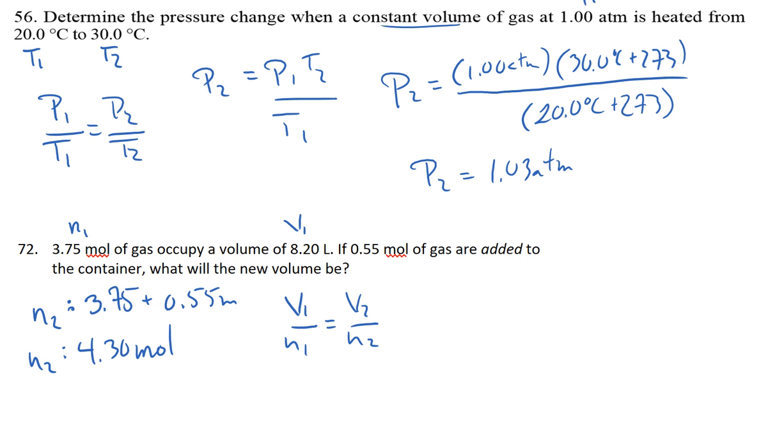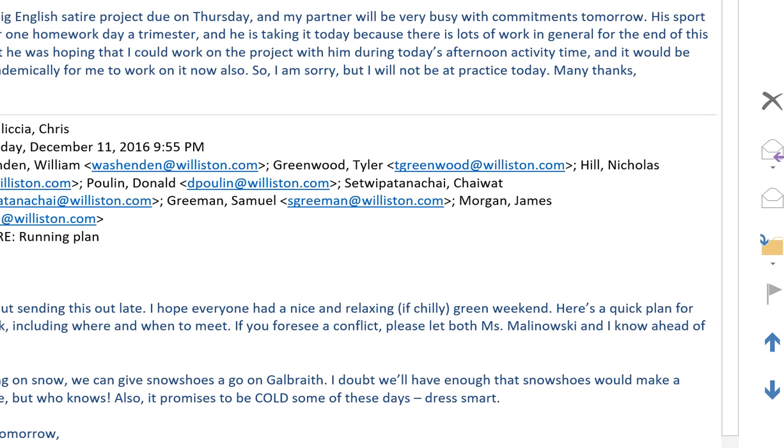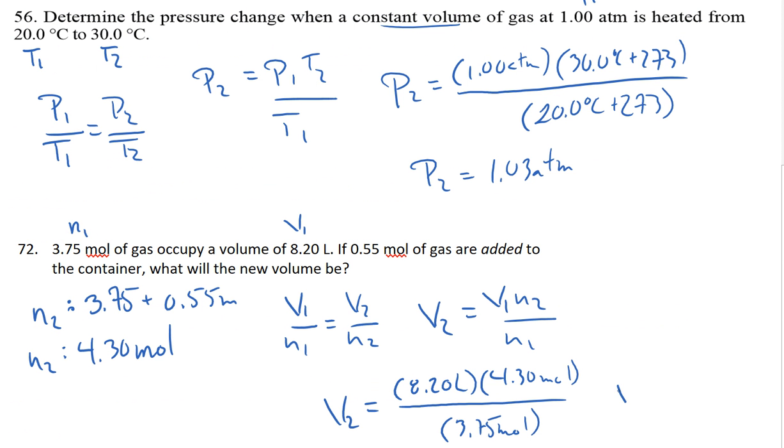Just as with the previous three problems, I want to isolate the variable. Here I'm solving for a new volume, so we'll get V2 by itself. Go through and plug in some numbers. V2 is equal to my initial volume, 8.2 liters, times my final number of moles, 4.30 moles, divided by the initial number of moles, 3.75 moles. Moles will cancel out, leaving with just a unit of liters, which is a good unit of volume. And I'll find that V2 is equal to 9.4 liters.